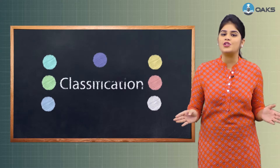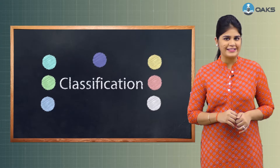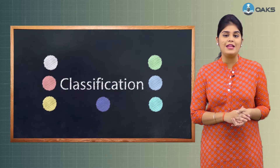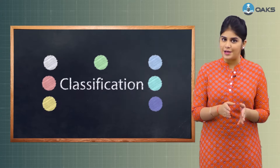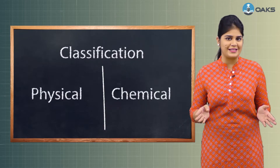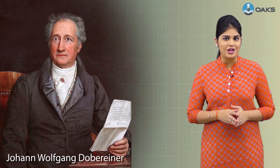Classification of these elements was done to make their study easier. Scientists made several attempts to classify the elements based on their behavior — that is, their physical and chemical properties. The first such attempt was made by Johann Wolfgang Döbereiner, a German chemist, in 1817.